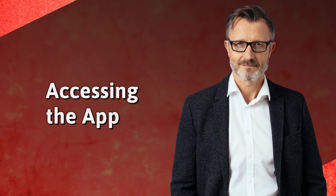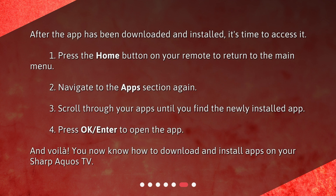Accessing the app. After the app has been downloaded and installed, it's time to access it. 1. Press the Home button on your remote to return to the main menu. 2. Navigate to the Apps section again. 3. Scroll through your apps until you find the newly installed app. 4. Press OK or Enter to open the app.